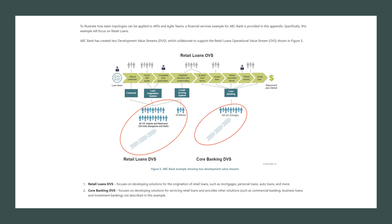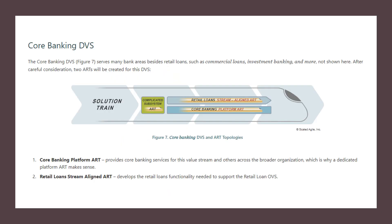The core banking DVS also provides other solutions such as commercial banking, business loans, and investment banking. We already discussed retail loans DVS in my previous video — you can refer to that video as well. In this example we are going to talk about only the retail loans part of the core banking DVS. After careful consideration of the scope of retail loans for the core banking solution train, we are talking about at least two ARTs.